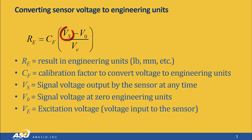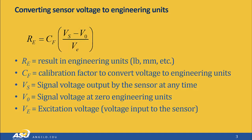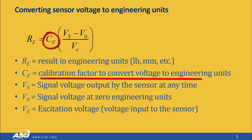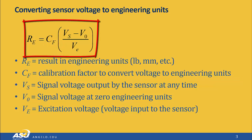To do that conversion, we take V_S, the actual signal voltage put out by the sensor, subtract V_0, which is the signal voltage at zero engineering units — so the signal voltage at zero pounds force or zero displacement. We divide that by V_E, the excitation voltage we put into the sensor. Then we multiply by C_F, the calibration factor that converts the voltage to engineering units. The basic formula is: R_E = C_F × (V_S − V_0) / V_E.